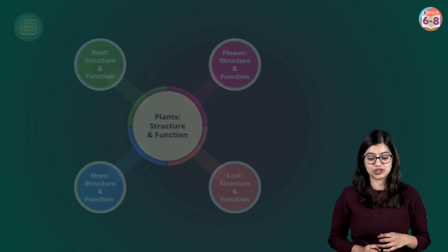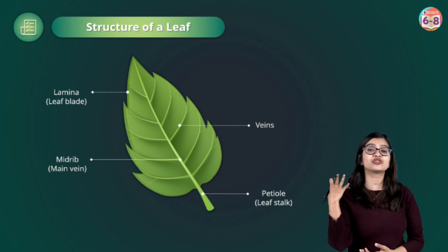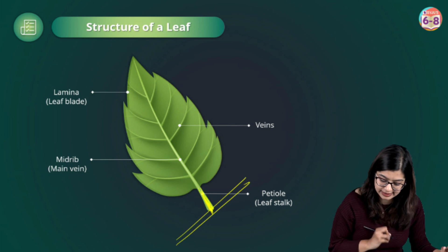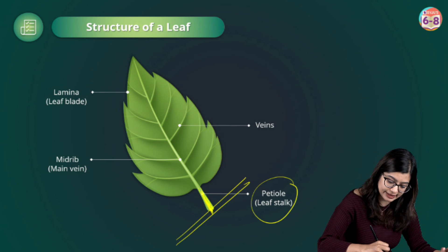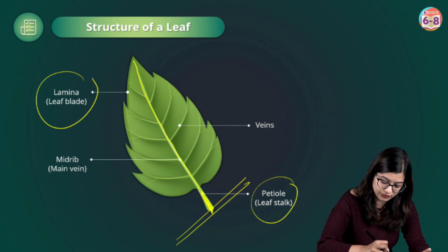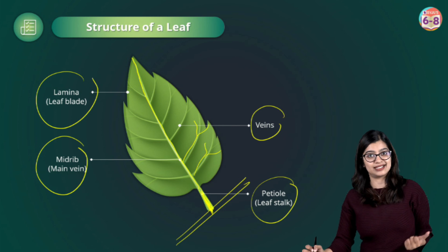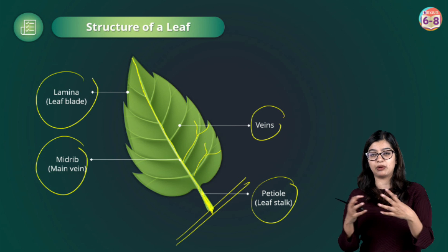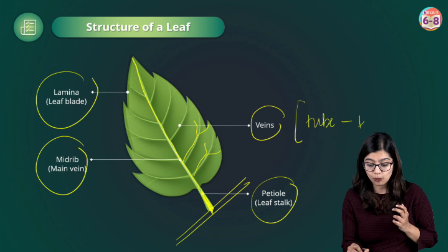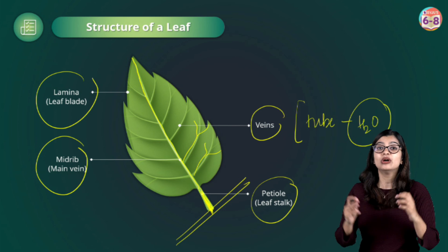Now let's move on to the third part, which is the leaf. Leaves come in different shapes and sizes and in most cases are green in color. Looking at the structure of a leaf: there is a stalk that connects it to the stem called the petiole. The leaf surface is called the leaf blade or lamina. There is a line running in the middle called the midrib, and branches coming off from the midrib are called veins. The midrib and veins have tube-like structures inside them, which bring the water and minerals absorbed by the roots — transported through the stem — to different parts of the leaf.